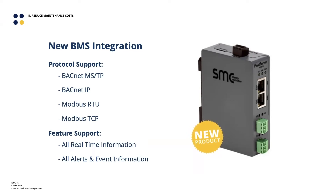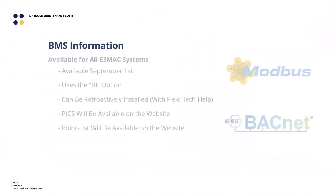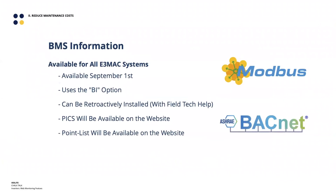All the real-time information, current alerts, and historical events can now be passed over to the existing BMS system. This will be available as of September 1st — you'll start to see the BI option show up in E3 MAC model numbers. Notably, it can also be retroactively installed because of the FieldServer appliance strategy — it can be done on units already installed in the field. We'll ask that a field technician help with that since there's some firmware work required, but if you have a previously supplied job that needs BMS integration, we can absolutely retrofit it.